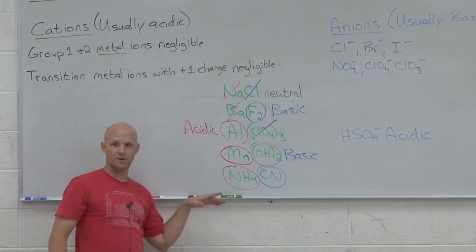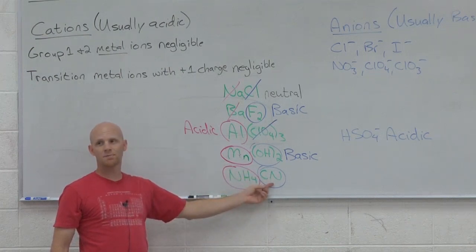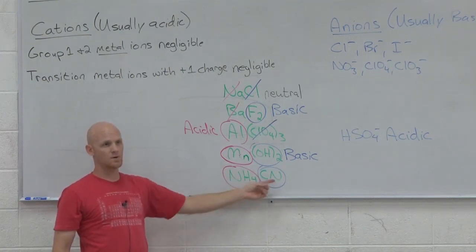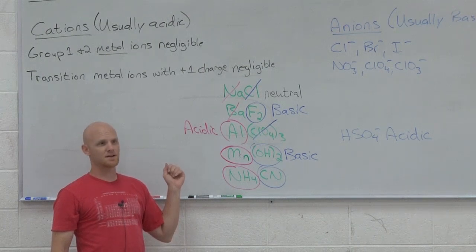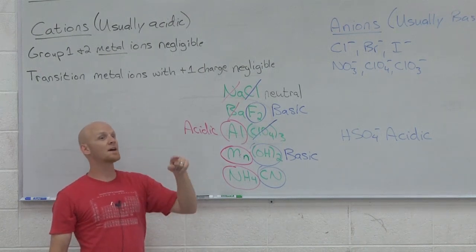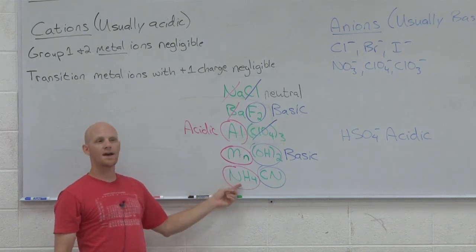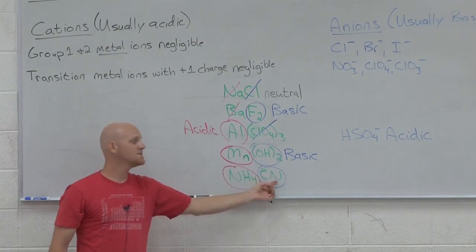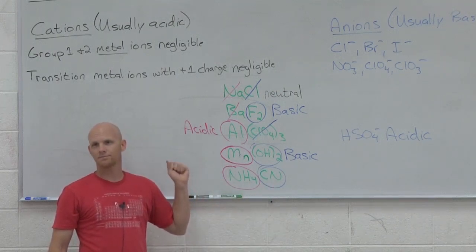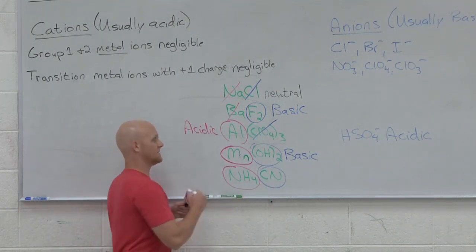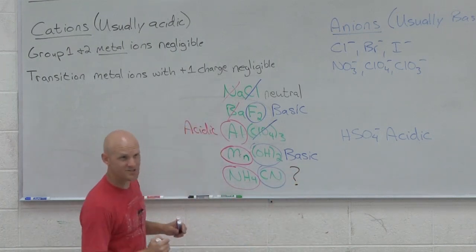Now the last one though. Ammonium ions are acidic. Cyanide ions are basic. Who wins? Or does anybody win? Without that chart though, you really can't answer this question. What you'd need is the Ka for ammonium ions and the Kb for cyanide ions, whichever one's higher would win. Right now you don't have enough info to answer this unless you have your chart.